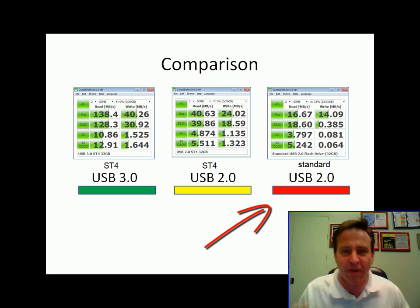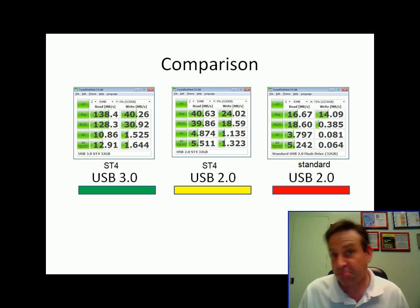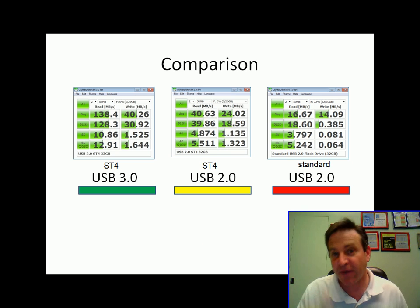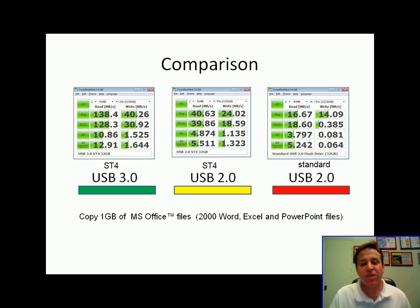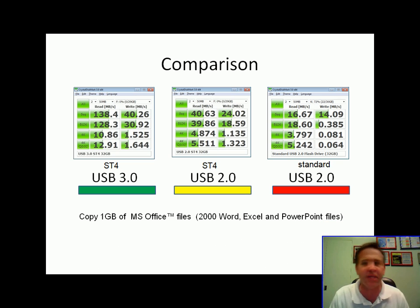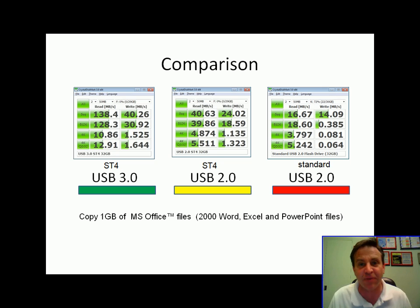Now if I was going to move a gigabyte worth of data — that's 1,000 megabytes of 512k randoms, which would be about 2,000 files. So 2,000 files of Word, Excel, PowerPoint, even PDFs and MP3 files.